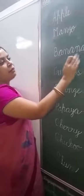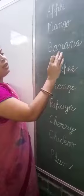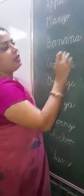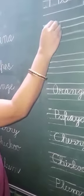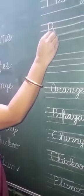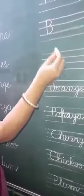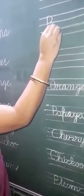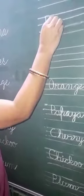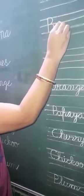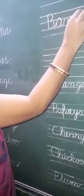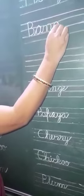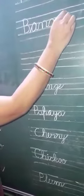Now speak with me: B, A, N, A, N, A. Banana. We have to write capital B. Pick up your pencil. Now put your pencil on the waist line. Write in cursive: A, N, A, N, A.